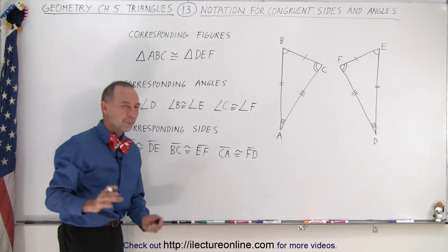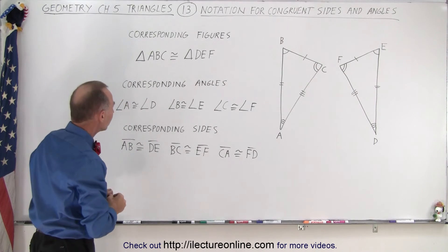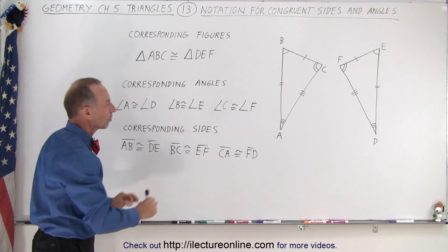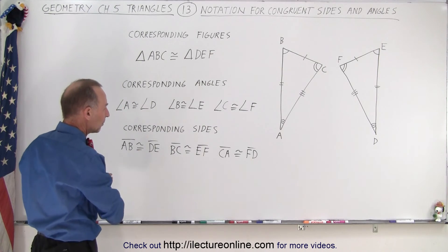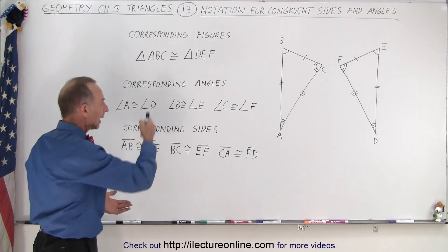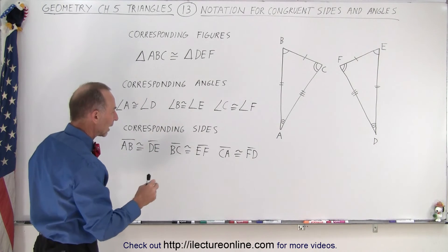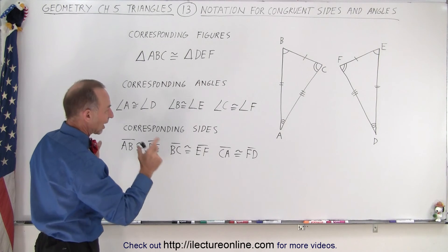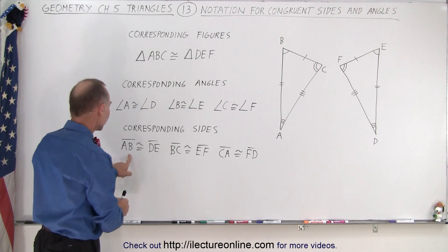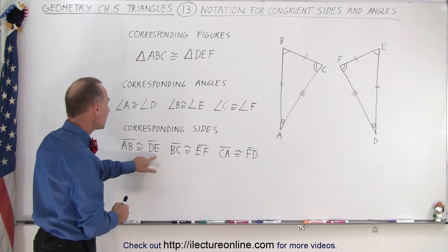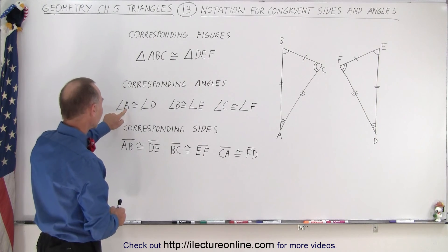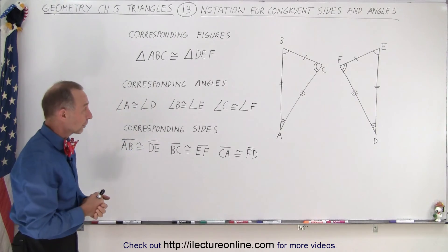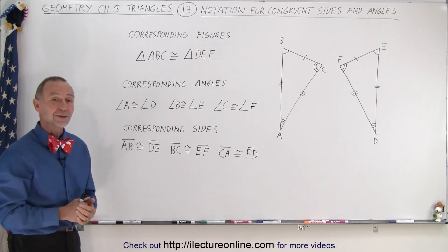And that is the proper way of writing this. We always want to move in the corresponding directions on both figures from angle to angle and along the sides, so that it clearly shows they are congruent — because moving from A to B is the exact same distance as moving from D to E, and the corresponding angles are congruent. And that is how it's done.